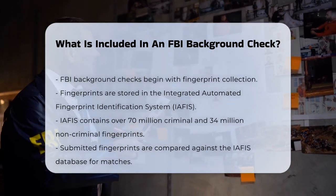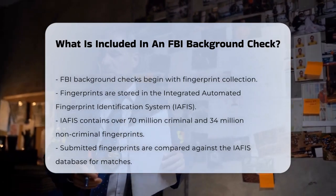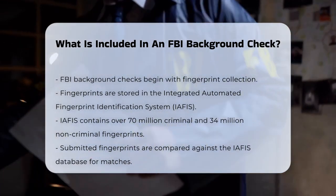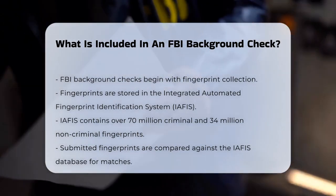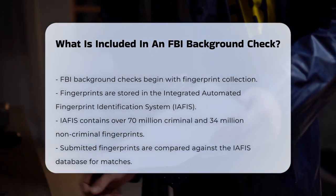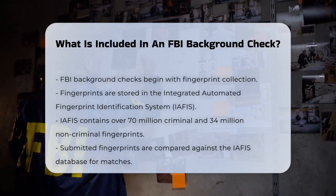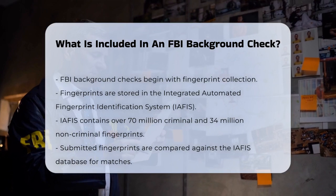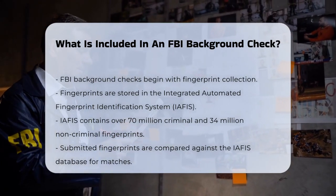First off, an FBI background check starts with fingerprints. These fingerprints are collected and stored in the Integrated Automated Fingerprint Identification System, or IAFIS, which is a massive database holding over 70 million criminal fingerprints and 34 million non-criminal ones. When your fingerprints are submitted, they are compared to the records in this database to see if there are any matches.